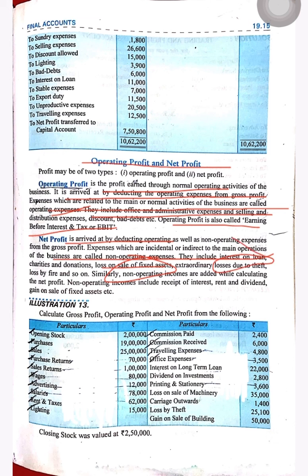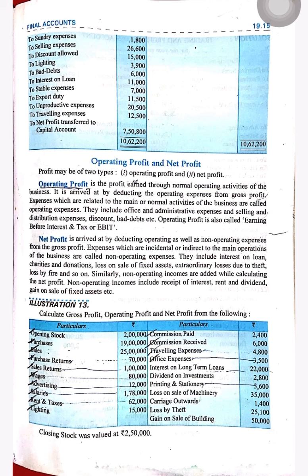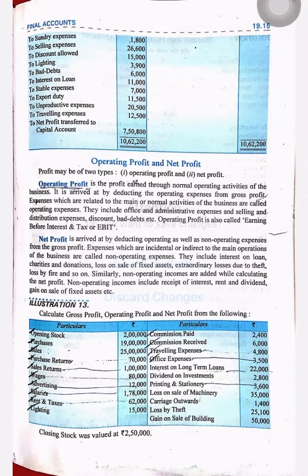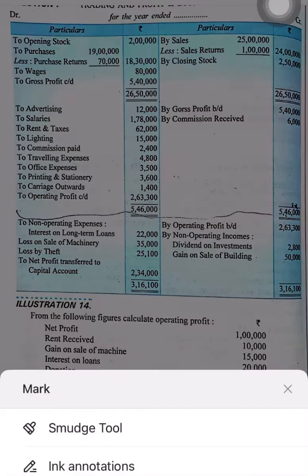Now let's move to the problem. We are given opening stock, purchases, sales, purchase return, and sales return in the trading account. We also have wages, advertisement, salary, and commission paid in the P&L account. Items like loss on sale of machinery or gain on sale of building will be included when calculating net profit, not operating profit.